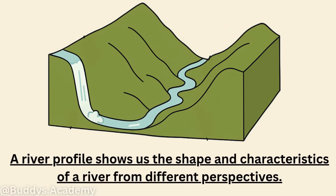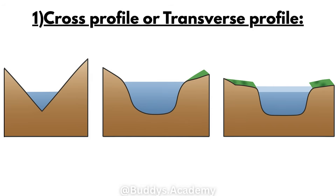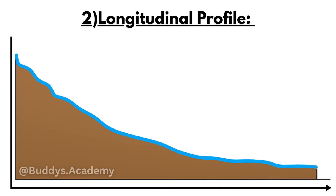So a river profile is going to show us the shape and the characteristics of a river from different perspectives. And there's going to be two main types of river profiles: the first being your cross profile or transverse profile, and your second being your longitudinal profile. Now let's break down each one and see what each one shows us.